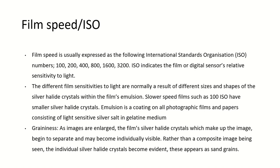ISO, or International Standard Organization: film speed is expressed as ISO and it indicates the sensitivity of the sensor towards the light. The different film sensitivities are due to different size and shape of the silver halide crystals within the film emulsion. Slower speed films such as 100 ISO have smaller silver halide crystals, whereas faster ones will have larger silver halide crystals. When we zoom an image, it will produce a graininess or blurredness due to silver halide crystals, as when we enlarge the image they begin to separate and become individually visible — this creates an effect known as graininess.